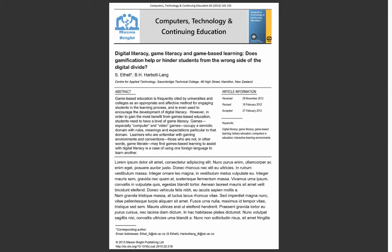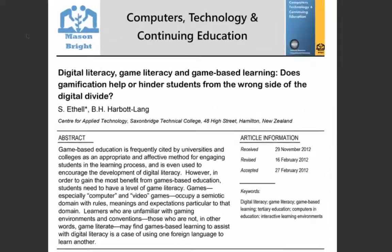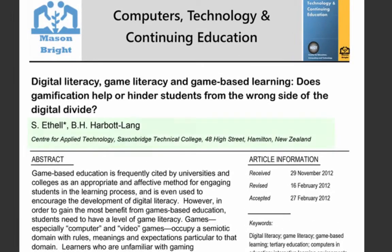Looking at the first checklist item, the author's names are clearly identifiable on the first page of the article. It includes their affiliation — that's who they work for — and in this case it's an academic institution, so that lends them some authority. So we can check off authors.